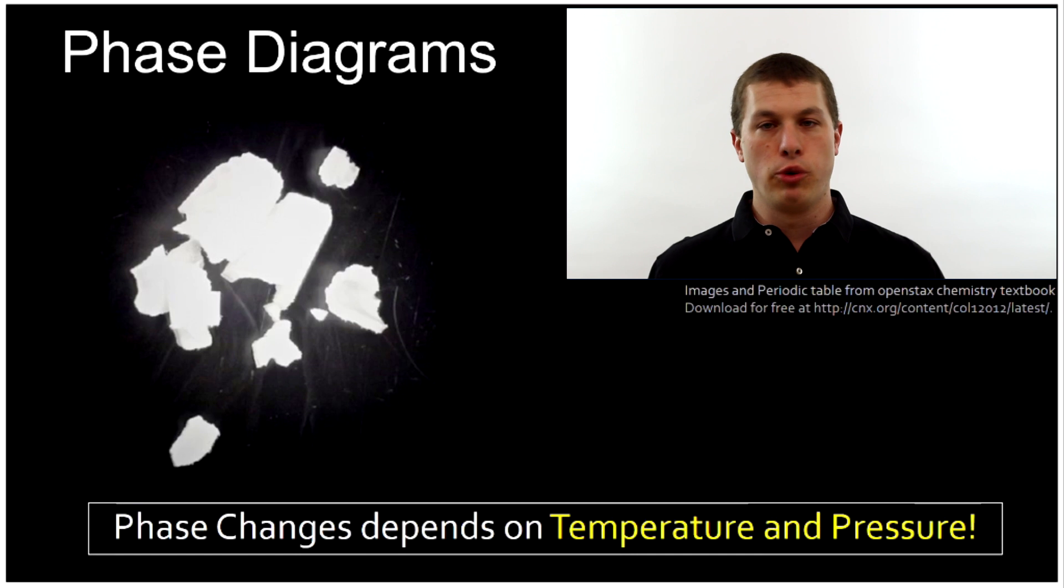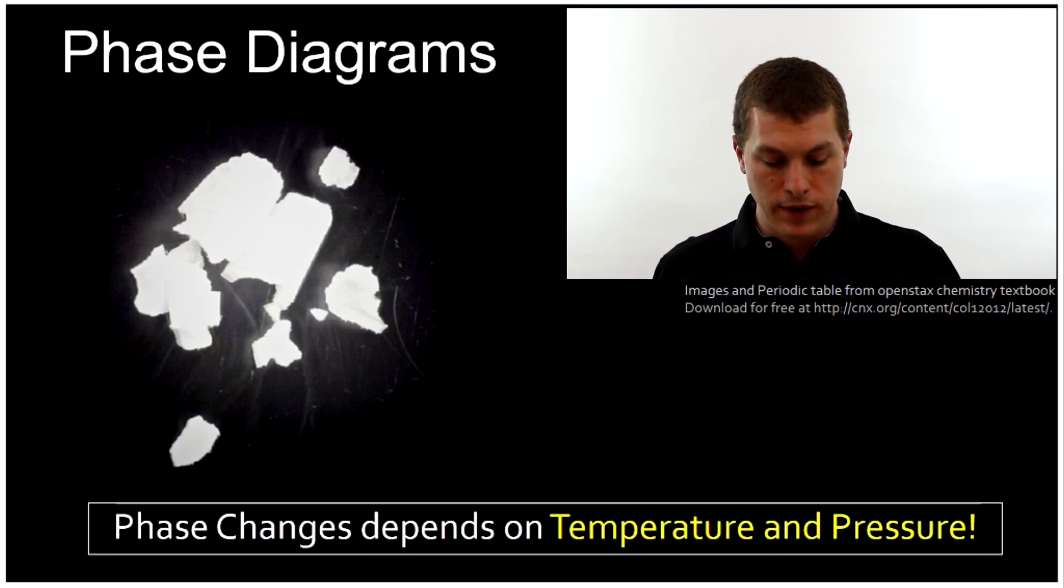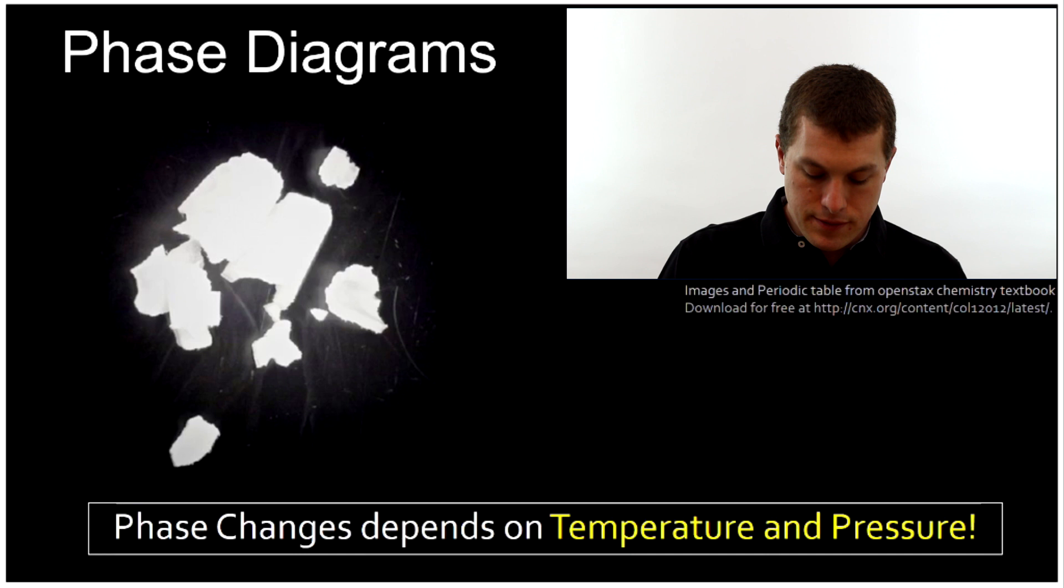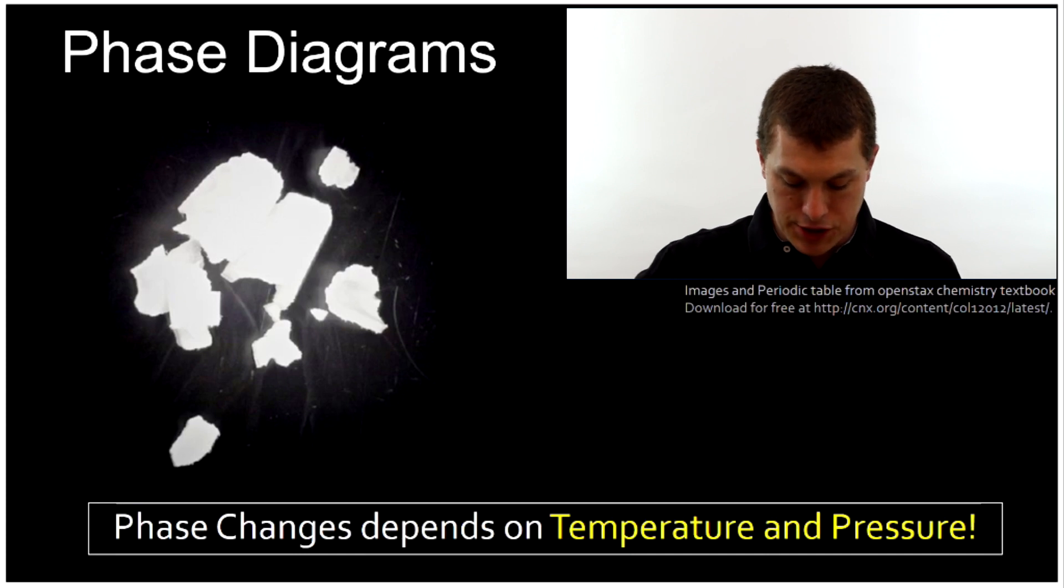So it turns out if we want to ask what phase something is, we can't just specify temperature, we have to also specify pressure. And that gives us two axes, a y-axis and an x-axis. And that's what we do on phase diagrams. We plot our phase as a function of pressure on our y-axis and temperature on our x-axis.